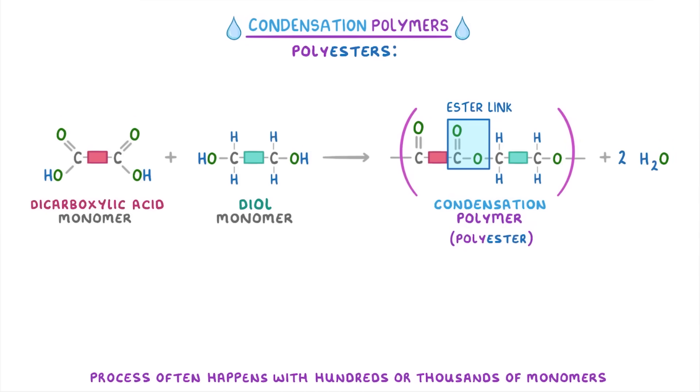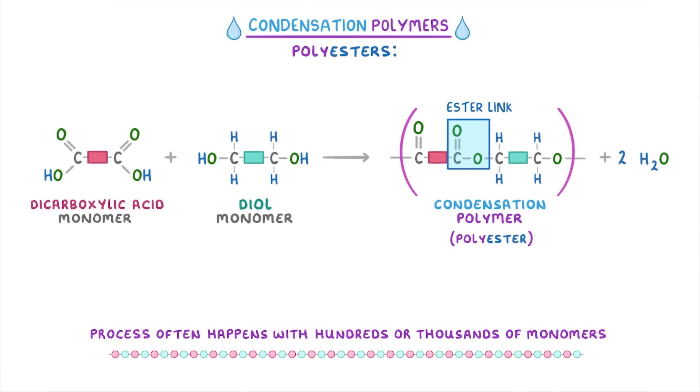In real life, this process often happens with hundreds or thousands of monomers. So instead of writing the exact number of molecules we have in front of each molecule, we instead use the letter N to represent how many there are. We put the N in front of each of our reactants and in the bottom right corner of our repeat units, and we need to put a 2N in front of our H2O because we form two water molecules per repeat unit.